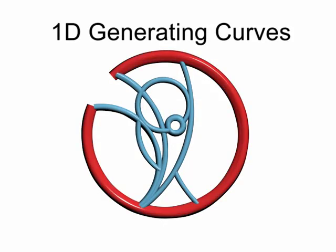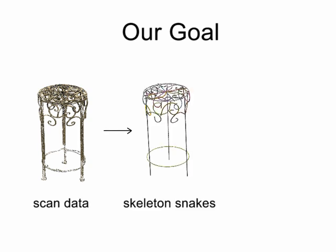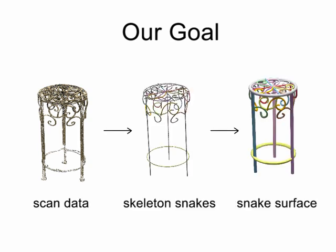We observe that such structures can be explained using one-dimensional generating curves which can be used to produce swept surfaces called arterial surfaces. We propose a novel deformable model called arterial snake that can simultaneously capture the topology and geometry of such input surfaces.